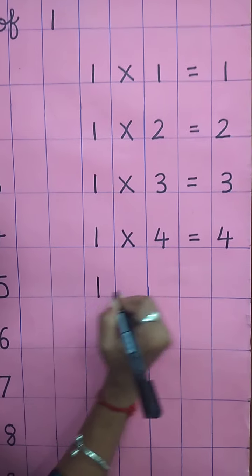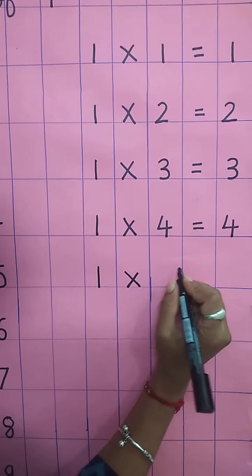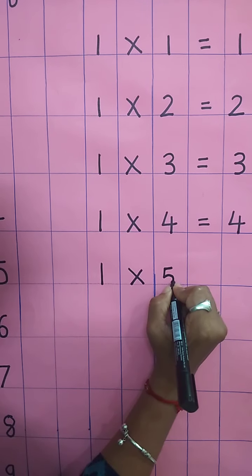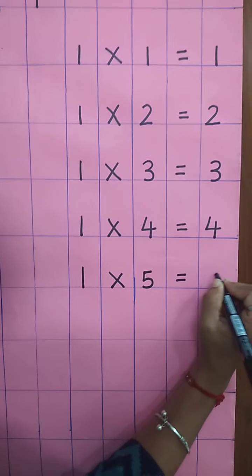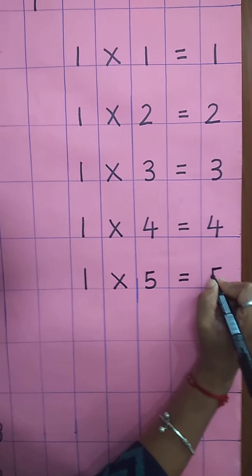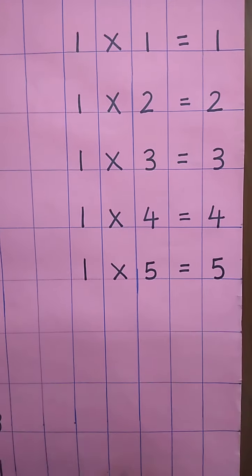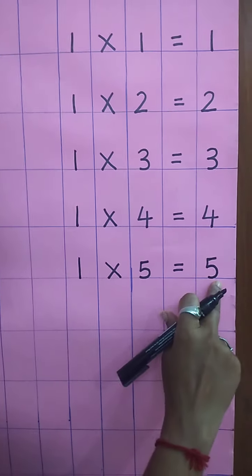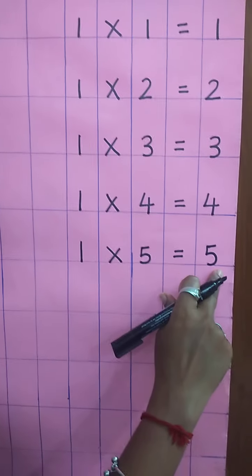Write down one. Multiplying sign. Write here five. Equal sign. And again, write here five. One five's are five. One five's are five.